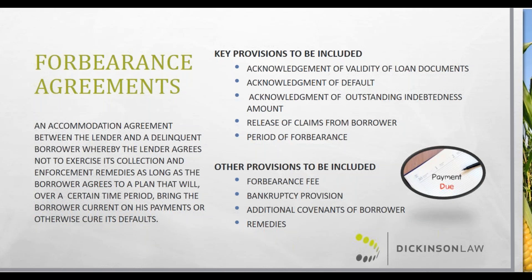What I typically recommend — and I know this can be tough — is that lenders should consider sending the required 45-day notice, scheduling the mandatory mediation, and ultimately filing the collection action. That action can always be dismissed if a forbearance or workout is agreed to, but if it's not, then you haven't lost any time moving forward. I realize this can be tough from a client relationship standpoint, especially with long-time agricultural borrowers, but with proper communication it's typically the best and most prudent move.